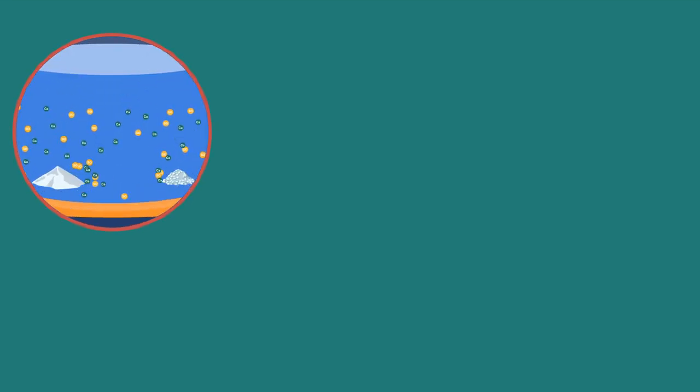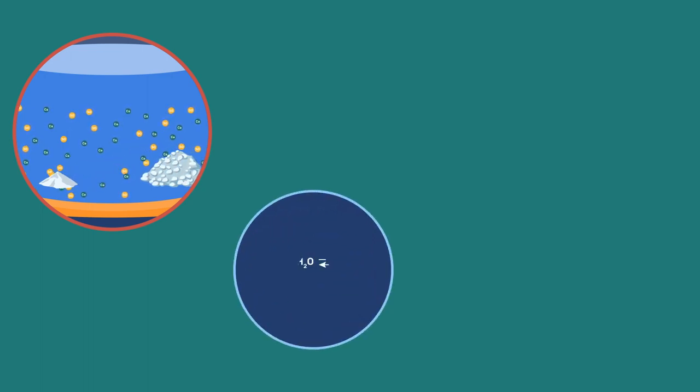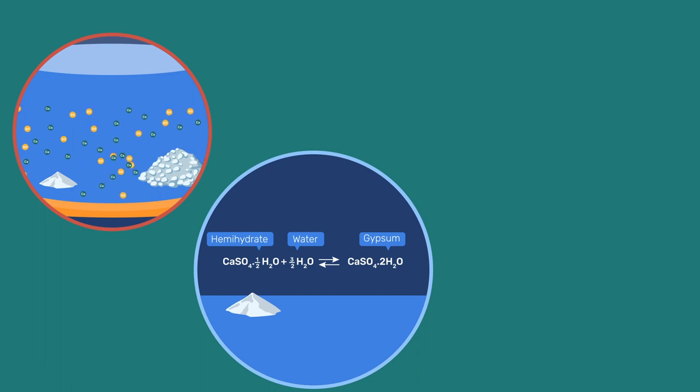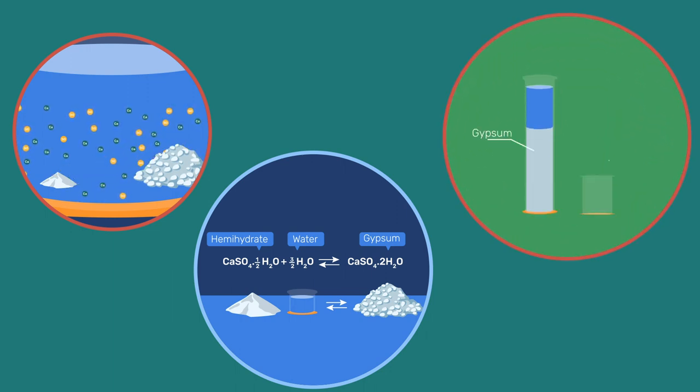In conclusion, the setting and hardening of gypsum involves the coupling between the dissolution of a more soluble phase, hemihydrate or anhydrite, and the precipitation of a less soluble phase, gypsum. In addition, these coupled reactions lead to an increase in the volume of solids, accounting for the observed setting and hardening. These basic principles also apply to other mineral binders, as we will see in subsequent videos. Let's keep going.